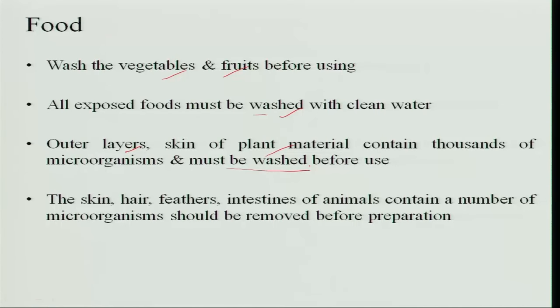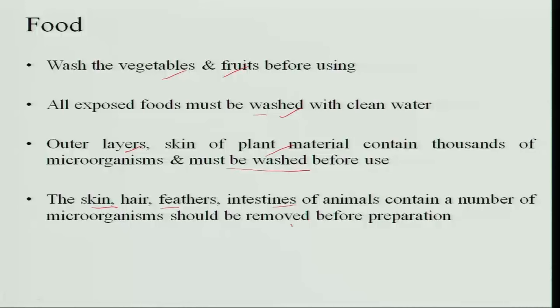With animal foods, the skin, hair, feathers, and intestines of the animals also contain a lot of microorganisms. So you remove the hair, the skin, and the intestinal parts — everything is removed — and only the muscle part and bone part is used for preparation.